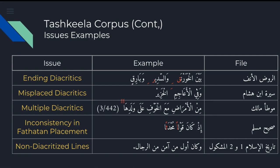Here we present some of the issues we faced in Tashkila and how to fix them. The first issue was that some diacritics are on the last letter of the word but are separated from it with one or more whitespaces. The second issue was that some diacritics follow non-Arabic letters such as whitespaces, numbers, and punctuations. Another issue is that multiple diacritics appear on a single character. We also found that when an extra alif is added, the fathatan placement differs depending on the school and conventions followed — one puts it immediately after the letter, and the other puts it on the alif itself. We also found lines and files completely undiacritized, and found that single paragraphs might be split across different lines.